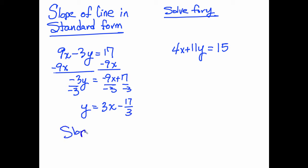So we can see that the slope of this line is 3, and the y-intercept is negative 17 thirds.